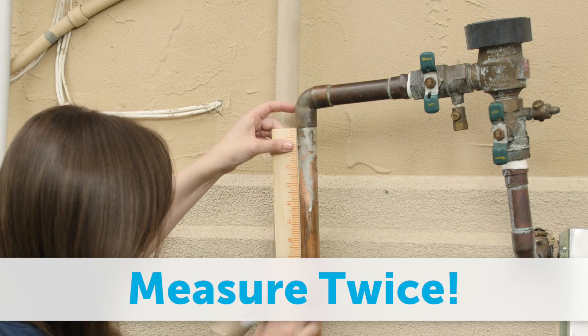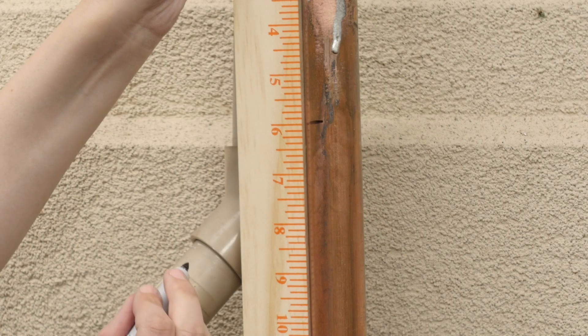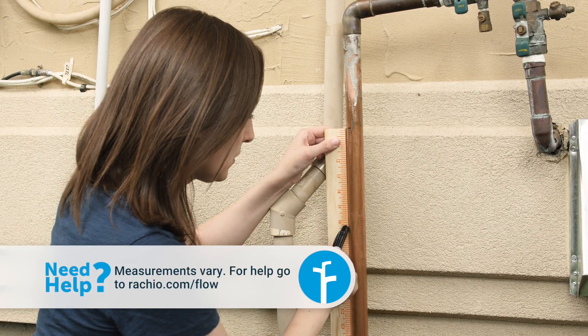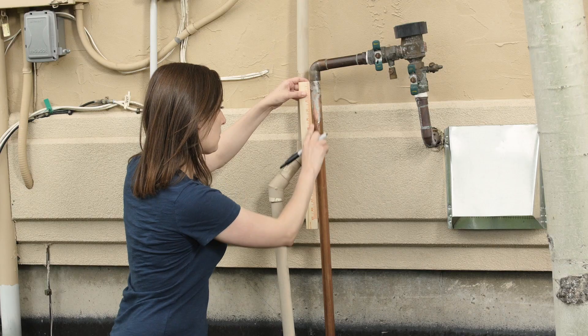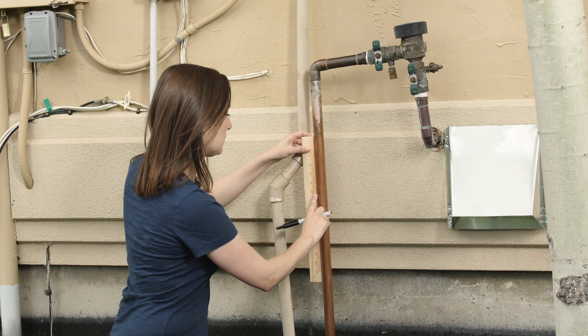Measure 6 inches from the last elbow or tee. Make a mark where we will later make the top cut. Now measure from this top cut down the pipe as indicated in the online instructions for your type of pipe. Make a mark for the lower cut. Double check your measurements, then place a small X on each of the cut marks.